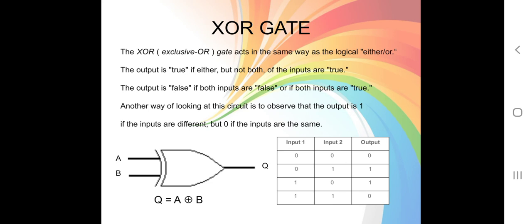We can conclude: if both inputs are the same — for example both inputs are zero, the output will be zero. If both inputs are one and one, the output will also be zero. If you have different inputs, one zero and one one, the output will be one.